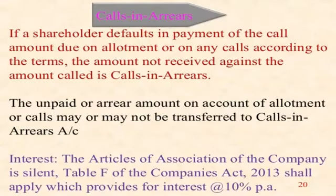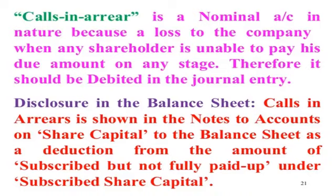Call in arrears: if a shareholder defers in payment of the call amount due on allotment or any calls according to the terms, the amount not received against amount called is called 'call in arrears.' The unpaid or arrear amount on account of allotment or call money may or may not be transferred to a call in arrears account. Interest: if the articles of association of the company are silent, Table F of the Companies Act 2013 shall apply, which provides for interest at 10% per annum. This is a nominal account in nature because it is a loss to the company when any shareholder is unable to pay his due amount. Therefore it should be debited in the journal entry. Call in arrears is shown in the notes to accounts on share capital to the balance sheet as a deduction from the amount of subscribed but not fully paid share capital.